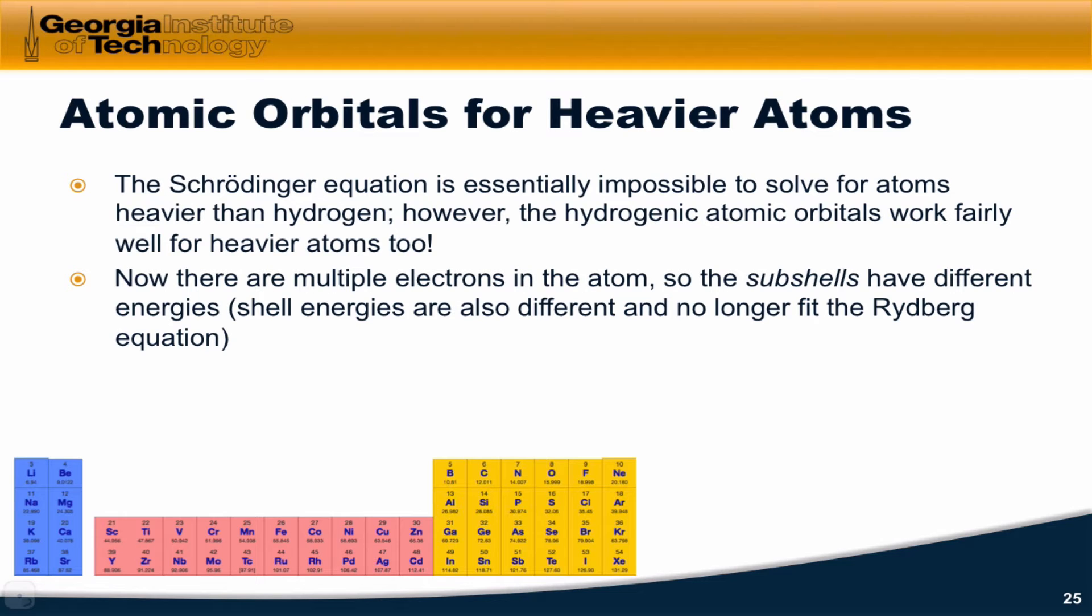But now there are some additional complications. We have more than one electron in the atom. That causes the subshells to have different energies, since the shape of an orbital is now related intimately to its energy within a shell.